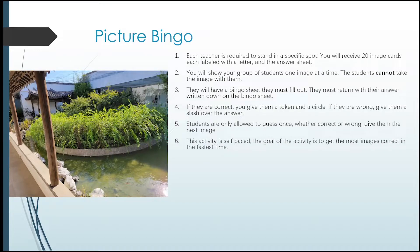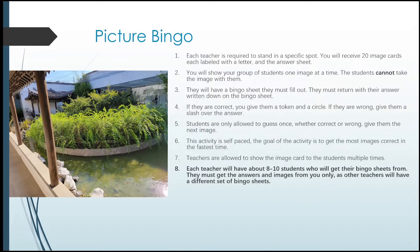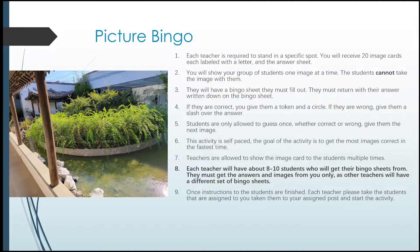This activity is self-paced. The goal is to get the most images correct in the fastest time. Because it's self-paced, you'll have various students coming to you at different stages — you might have student one still trying to find the answer to the first image, and maybe another student already on image C. Teachers are allowed to show the image cards to students multiple times. Each teacher will have about 10 students coming to you for the images. They must get the answers and images from you only, as other teachers have different sets of bingo sheets. After I give the instructions to everyone, each teacher, please take the students assigned to you, go to your assigned post, and start the activity.